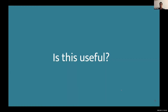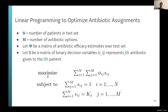These AUCs are low — this is not an inpatient mortality task where you expect 0.95. The question becomes: is this useful? To address that, we developed an optimization method using out-of-sample predicted probabilities. Let N be the number of patients in the held-out test set, M be the number of antibiotic options (12 models), and phi be an N×M matrix of antibiotic efficacy estimates — the out-of-sample predicted probabilities from our models.